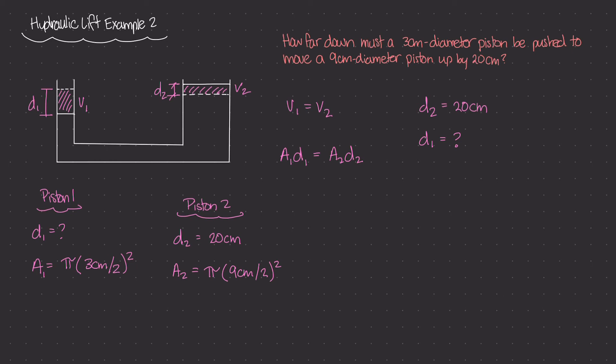Great, we have A1, we have A2, and we have d2, so we can use this relationship right here to figure out what our d1 value is. So again, A1 was π times (3 cm / 2)² times d1, which is our unknown, and that's equal to π times (9 cm / 2)² times d2, and d2 was 20 cm.